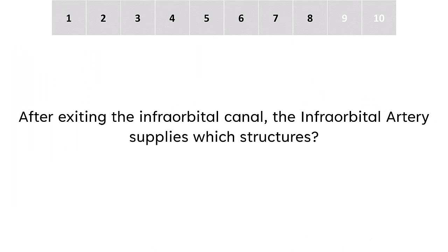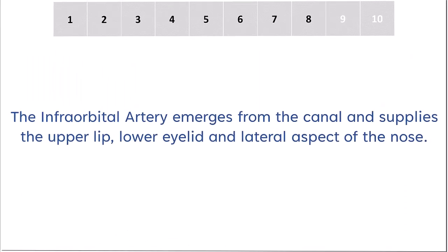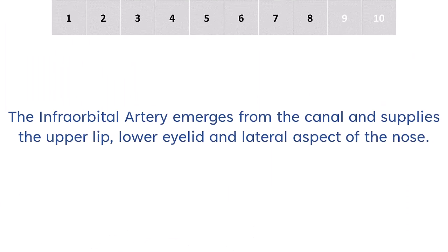After exiting the infraorbital canal, the infraorbital artery supplies which structures? The infraorbital artery emerges from the canal and supplies the upper lip, lower eyelid, and lateral aspect of the nose.